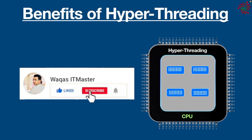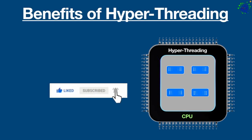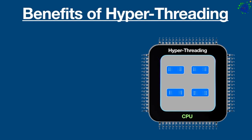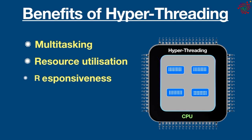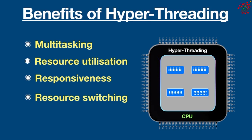The benefits of having a hyper-threaded CPU include multitasking, efficient resource utilization, and responsiveness. The most significant benefit is that the CPU can switch resources between threads — for example, while running a video game in the foreground alongside several background tasks, the processor will not struggle.